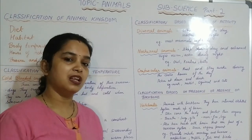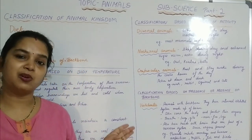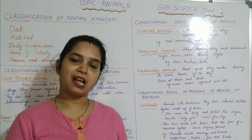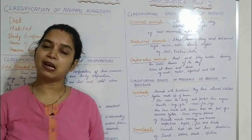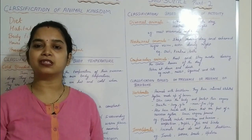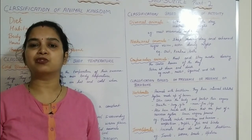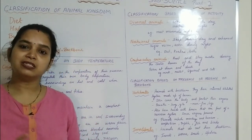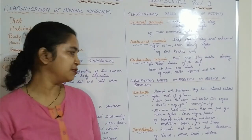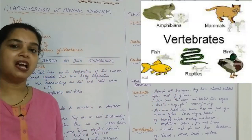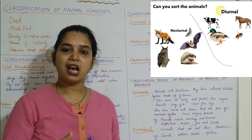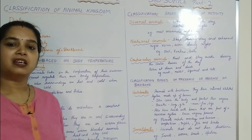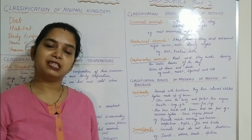The fifth classification is based on the presence and absence of the backbone. If the backbone — or vertebral column — is present in an animal, it is called a vertebrate. If the backbone is absent, it is called an invertebrate. In human beings, when you touch your back, you can feel a long bone running along the back of the body, which allows you to stand straight and bend. This is called the vertebral column or backbone.